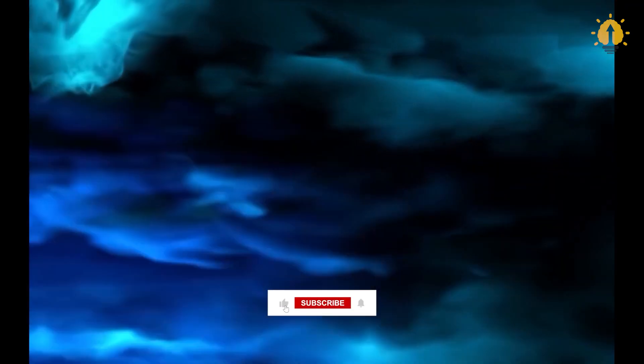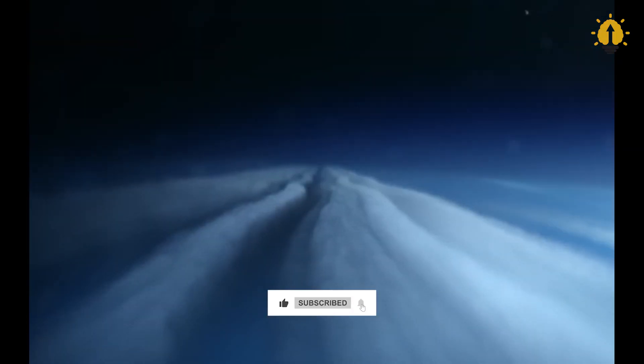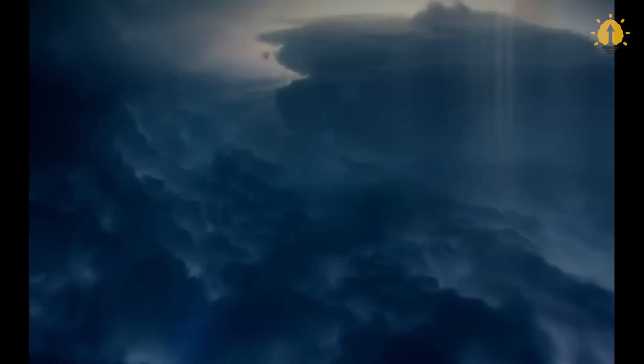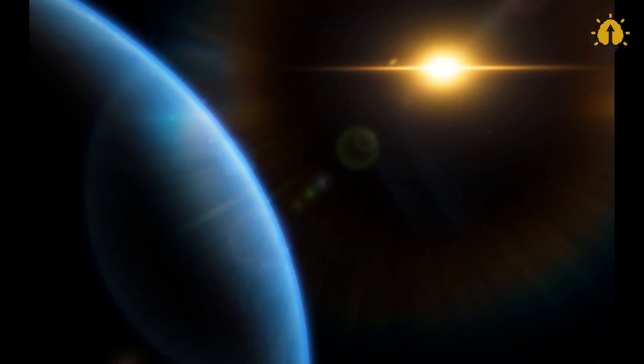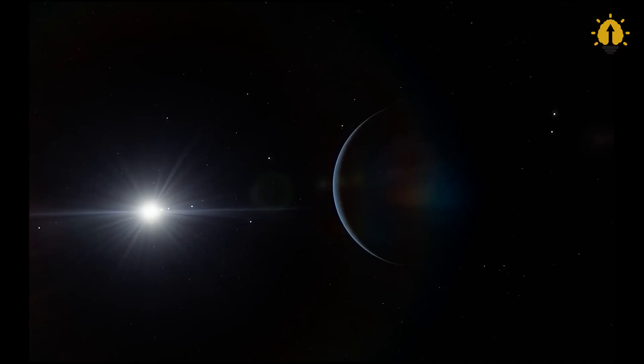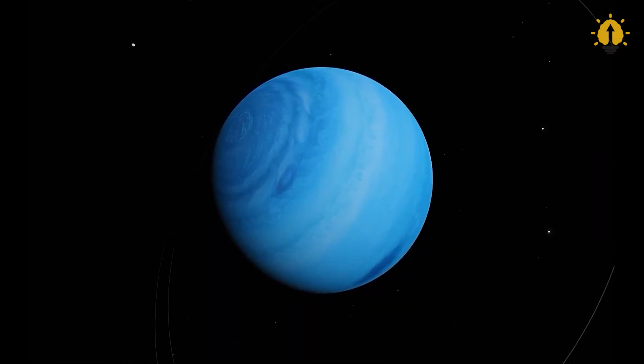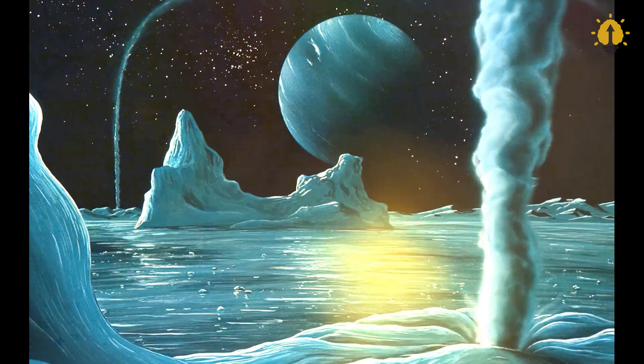During its encounter with Neptune, Voyager 2 recorded wind speeds of up to 1,000 miles per hour, making it the fastest wind ever recorded on a planet in our solar system. As the spacecraft passed within 2,980 miles of Neptune's azure methane-rich atmosphere, it provided unprecedented insights into this distant world.